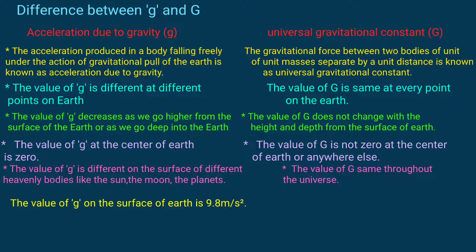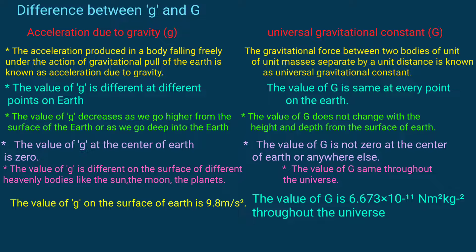The value of g, that is acceleration due to gravity, on the surface of the earth is 9.8 meters per second square. The value of G, that is universal gravitational constant, is 6.673 into 10 raised to power minus 11 Newton meters squared per kilogram squared throughout the universe.